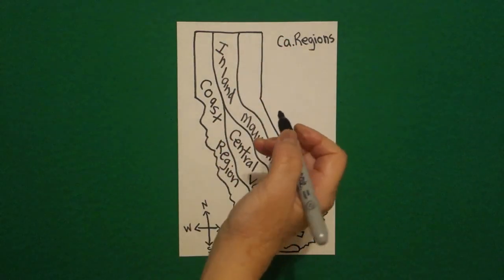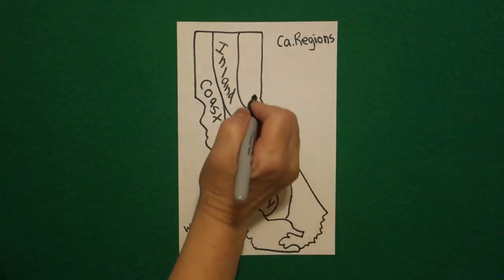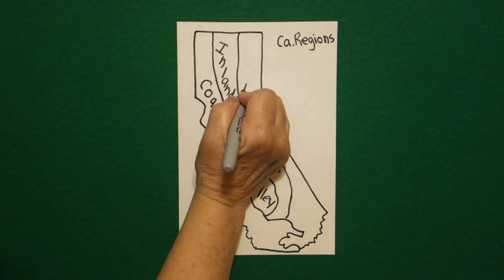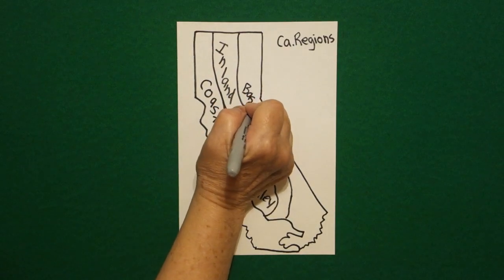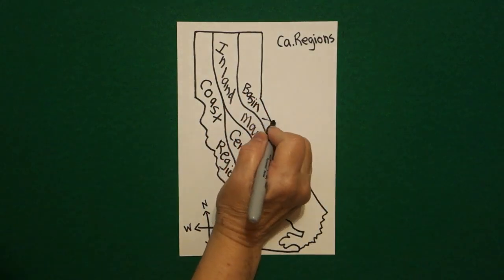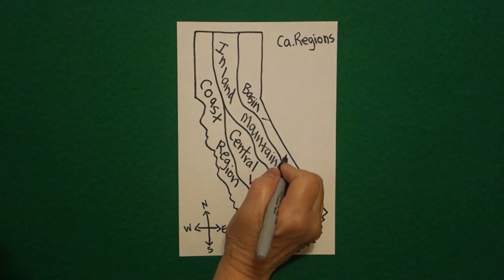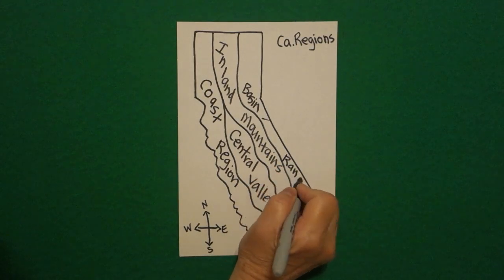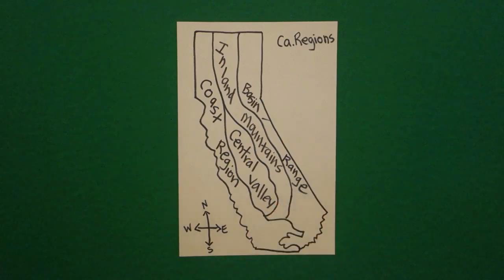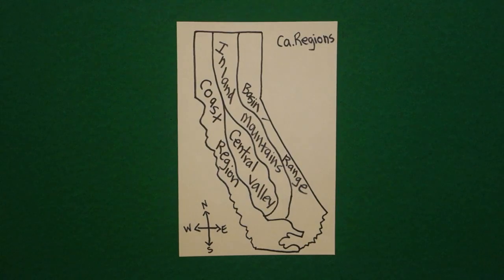And this last section is the basin. I guess I'll put basin slash range. And that goes all the way down. Maybe we need a word bank so that we label this correctly.